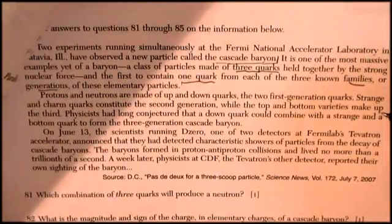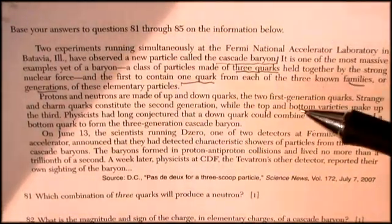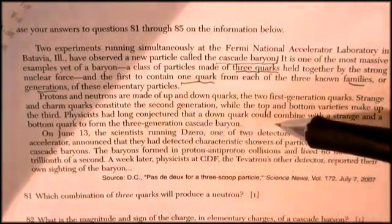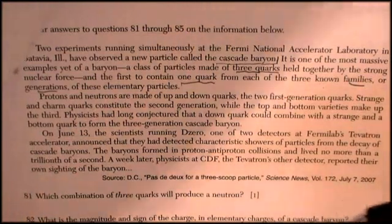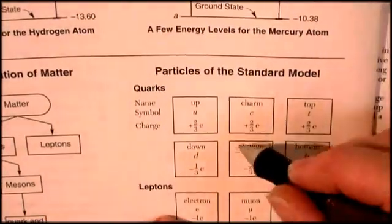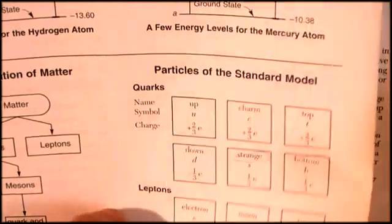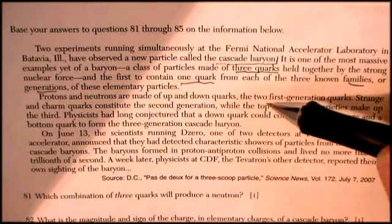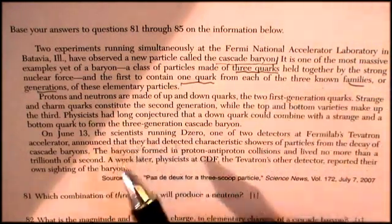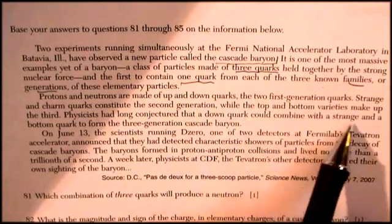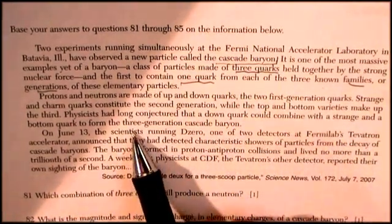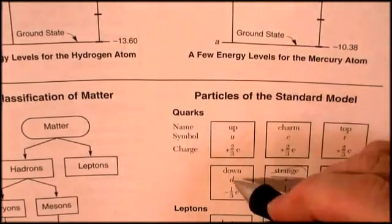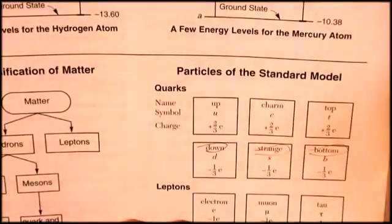But we're told that this thing contains one from each of the generations. There's a down quark combined with strange and a bottom quark. So we've got a strange quark and a bottom quark combined with a down quark. The top and bottom varies make up the third. A down quark could combine with a strange and a bottom quark to form the three generation cascade baryon. So this cascade baryon has a down quark, a strange quark, and a bottom quark.